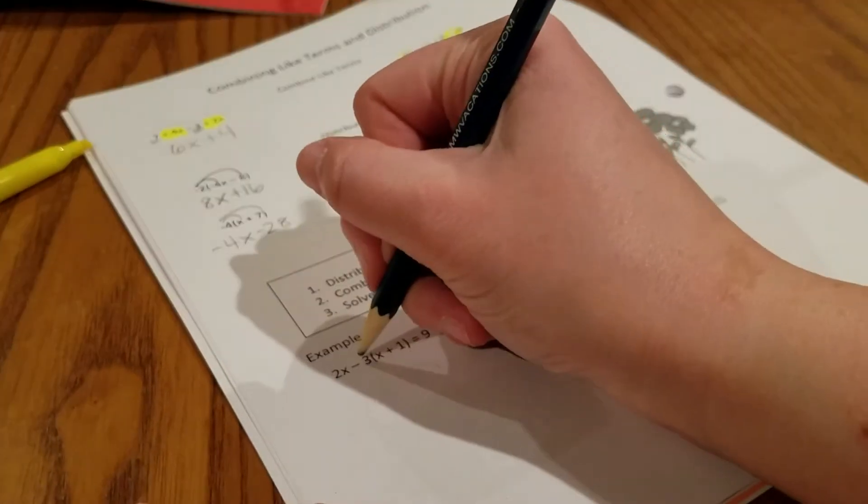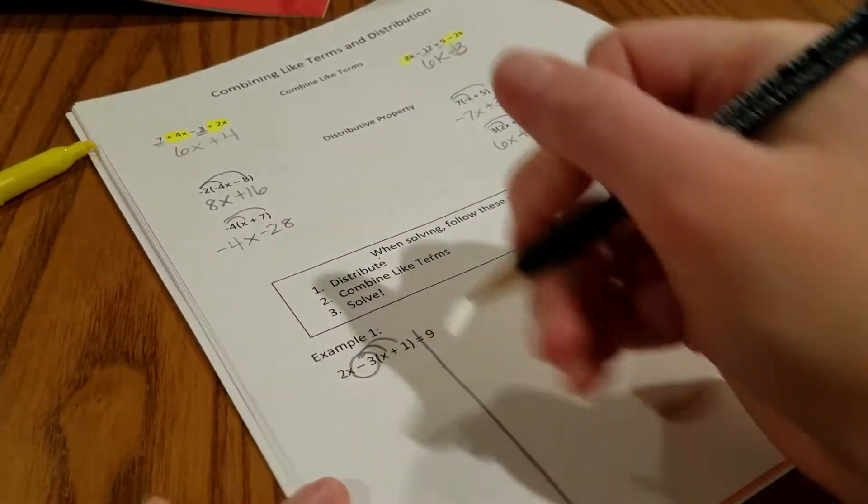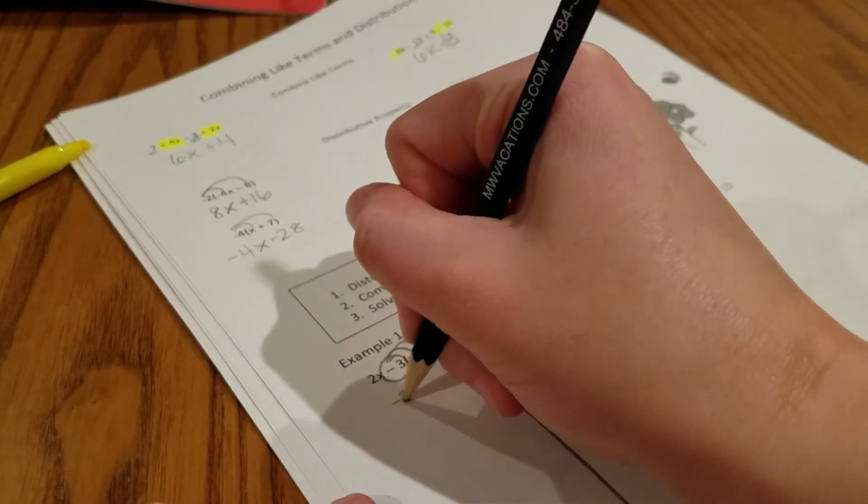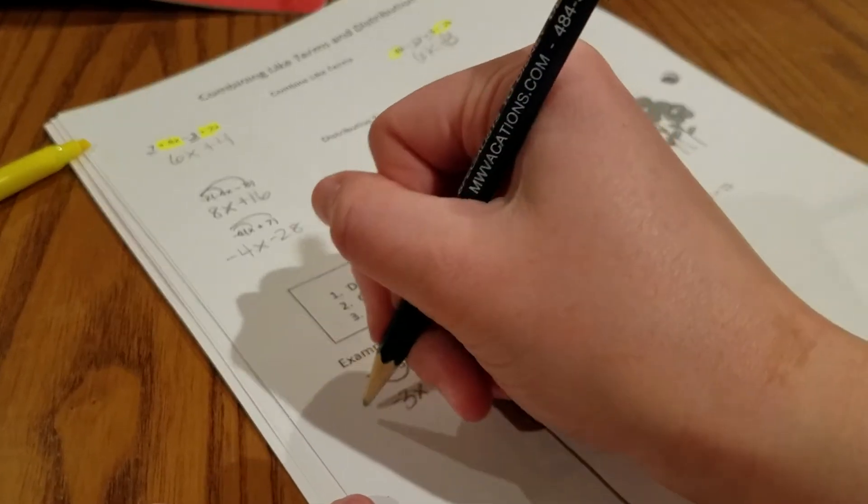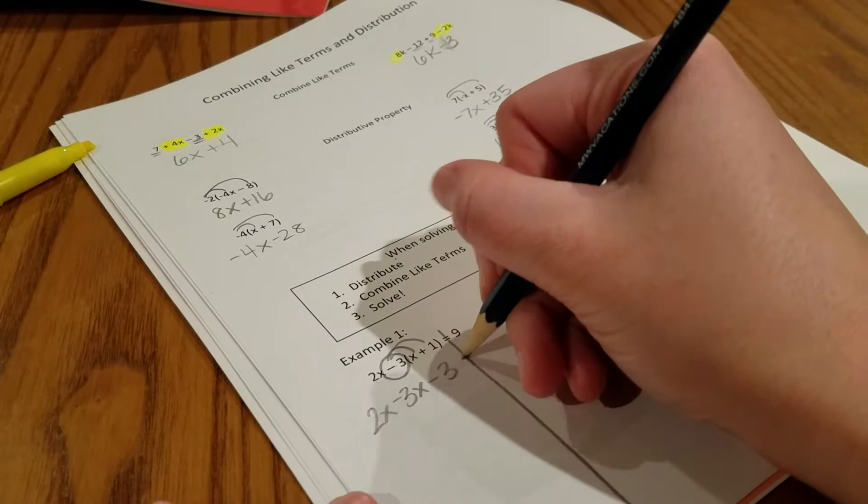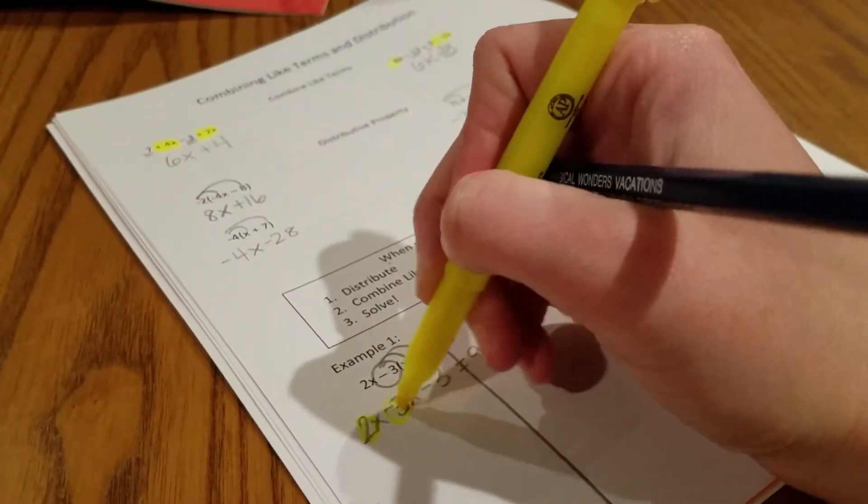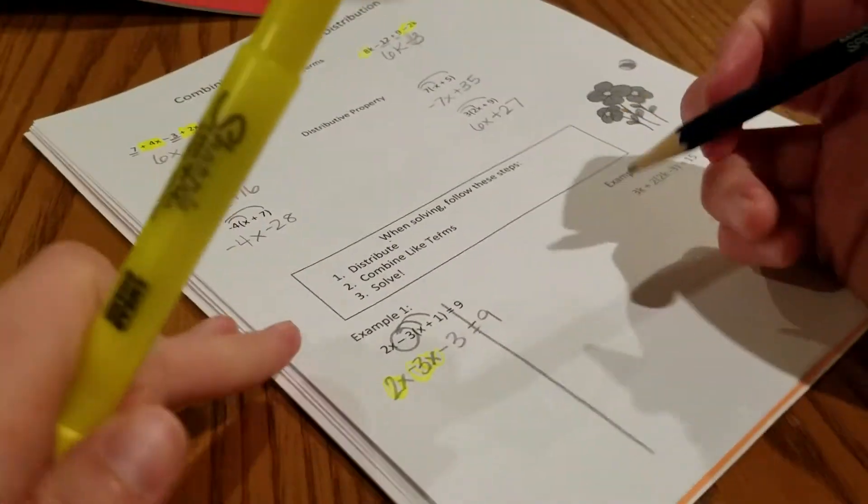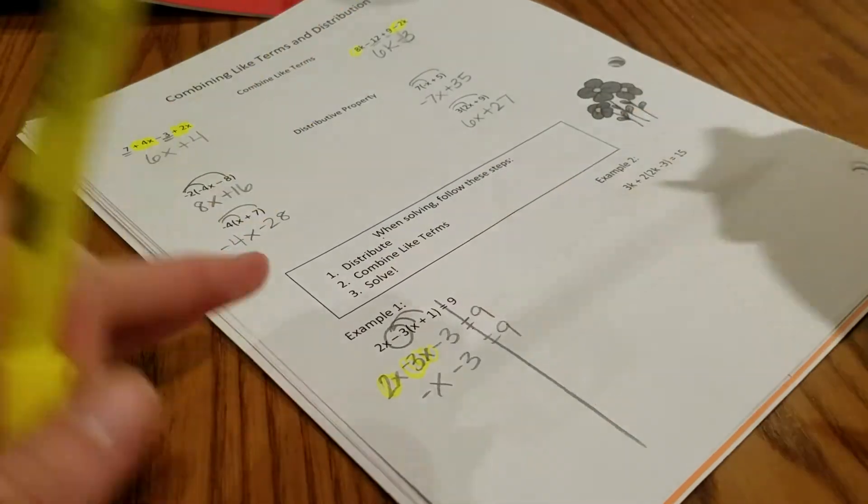Parentheses have to come first. So in this one, we are going to take this negative 3 and distribute it. Negative 3 times x is negative 3x. Negative 3 times 1 is negative 3. And the 2x is just chilling out front. Equals 9. I have some like terms. So I have 2x and negative 3x, which is going to give me negative x minus 3 equals 9.